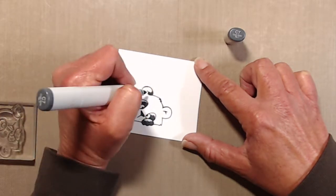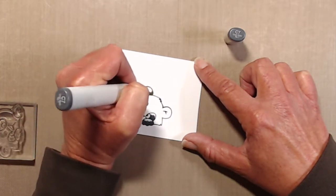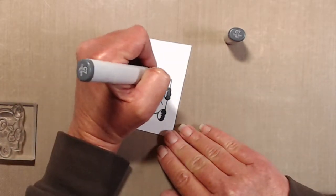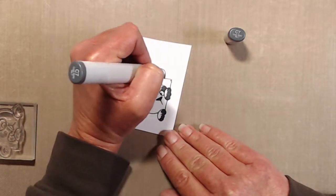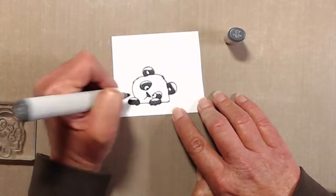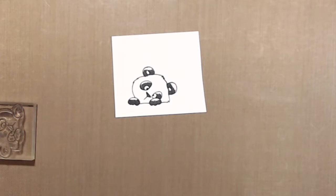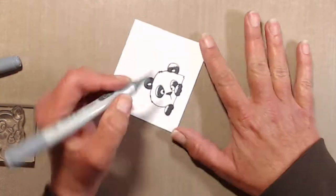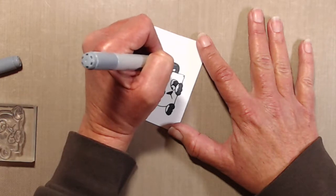Then I started to color in the panda and I started with C7 and just added the color where I wanted it to be darkest. Since those areas are pretty small, I was just using a light hand doing a flicking motion. To make sure that I stayed in those tiny areas, I made sure to hold my marker pretty much straight up and down instead of more at an angle.